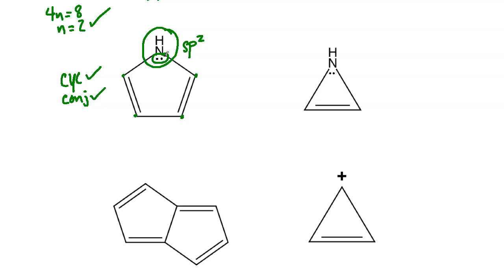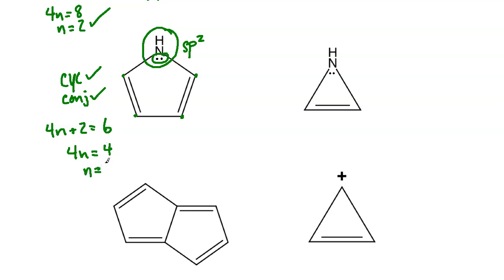Because the nitrogen is sp2, you must count its lone pair electrons toward the pi electron count. So: 4n + 2 = 6, since each double bond contributes 2 electrons and the nitrogen contributes the last 2. Then 6 − 2 = 4, so 4n = 4 and n = 1 — a whole integer. This compound is aromatic.